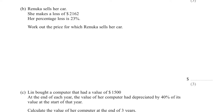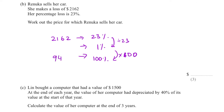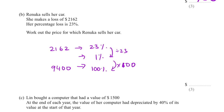She sells the car and makes a loss of £2,162. Her percentage loss is 23%, so 2,162 is equivalent to 23%. To find the original price, divide by 23 to get 1%, then multiply by 100: 2,162 ÷ 23 × 100 = 9,400. She made a loss, so the selling price is 9,400 − 2,162 = 7,238.